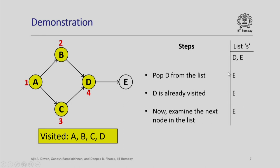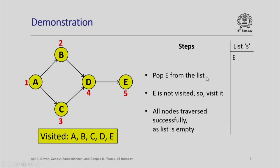Next, we again pop the element D because it is a queue. Only E remains here. Since D is already visited, we forget it. We again go to the list. We examine the next node in the list which is E. We pop E from the list. E is not visited. So, we visit it. It has no outgoing edge. All nodes are now traversed successfully because the list is empty. There is nothing more to do and the order is A, B, C, D, E.